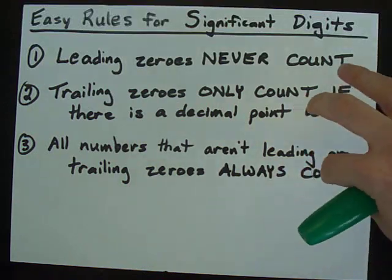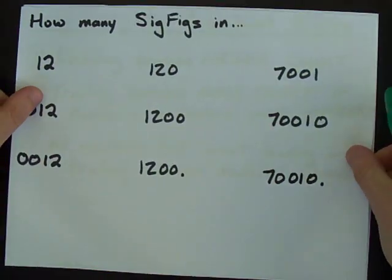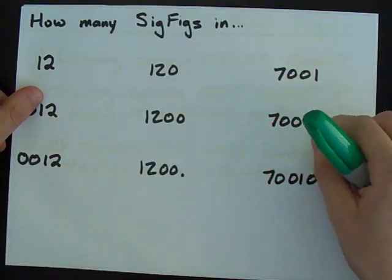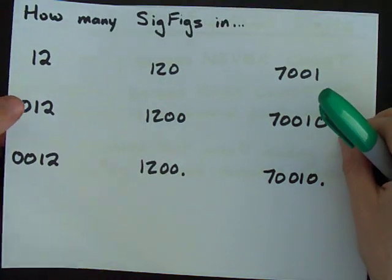So, let's apply these three rules to these nine numbers and see if we can figure out how many significant digits are in each one.